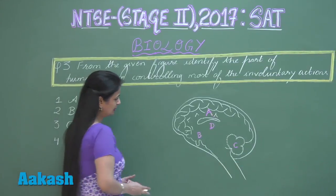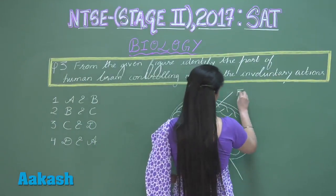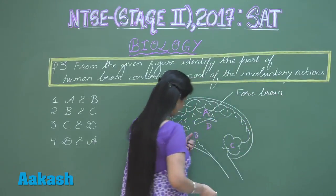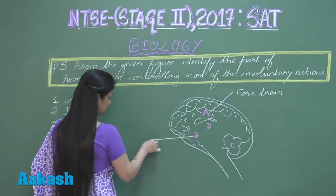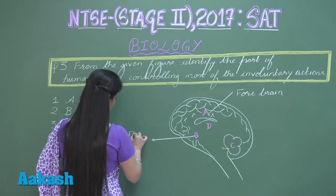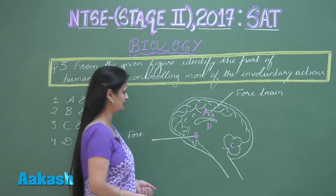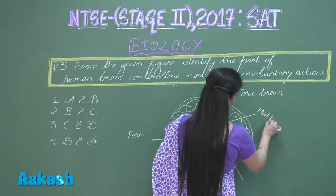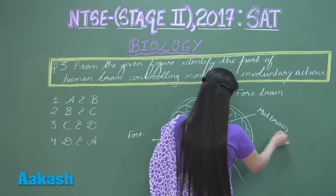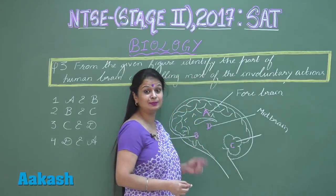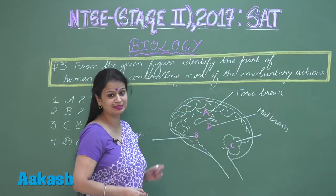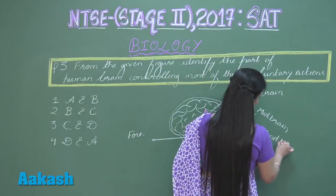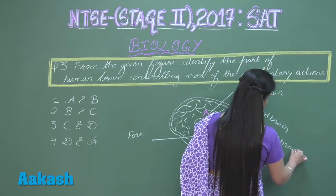Looking at this diagram, option A is the forebrain — that is the cerebrum. The B part is also part of the forebrain and represents the hypothalamus. D is the midbrain, and C is the cerebellum, which represents the part of the hindbrain.